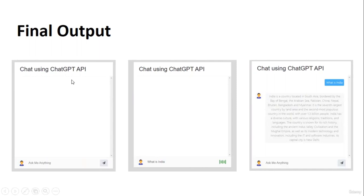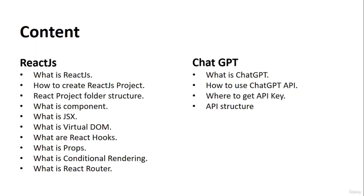Through this chat UI, we can write a question — for example, 'What is it?' — and when we hit Enter or click the Search button, this data is going to fetch results from the ChatGPT API and display the response. This is the final output of our course.